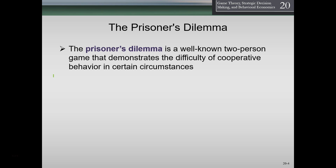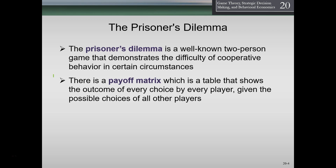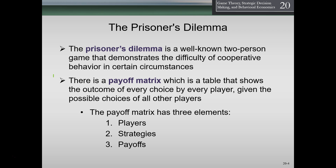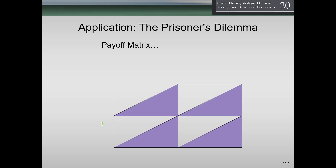The Prisoner's Dilemma is the most famous type of game theory — the first introductory problem in game theory. We can analyze it through payoffs and outcomes. It is a well-known two-person game that demonstrates the difficulty of cooperative behavior in certain circumstances. The two prisoners cannot talk to each other, so there is no cooperative outcome. There is a payoff matrix — a table showing the outcome of every choice by every player given the possible choices of all other players. The payoff matrix has three elements: the players, the strategy, and the payoffs.